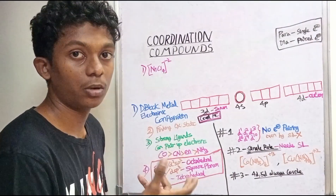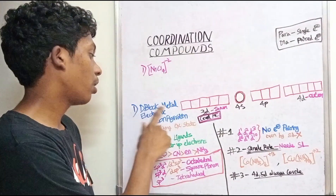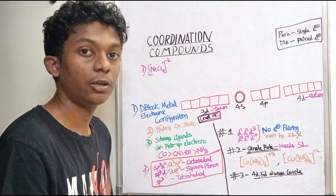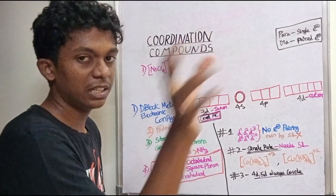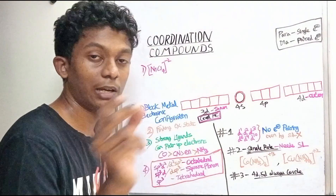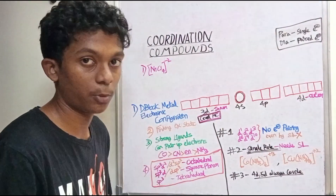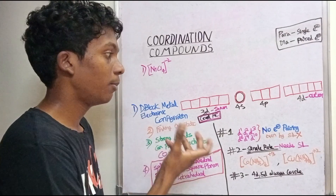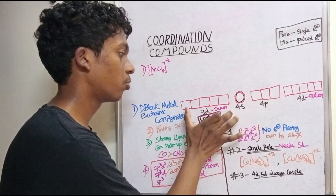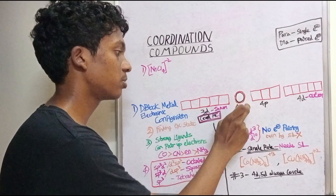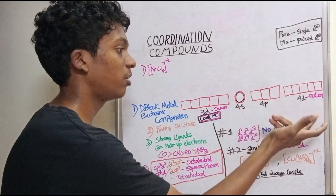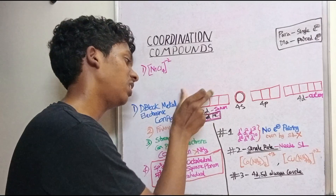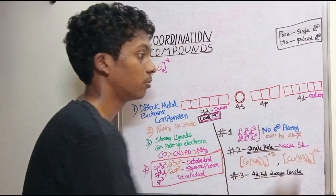First, what do you need to do? D-block electronic configuration. In the 3D series, you can use all electronic configurations. You can learn how to find it easily. In D-block, there is 3D, 4S, 4P, and 4D orbitals.